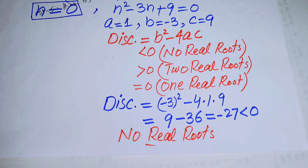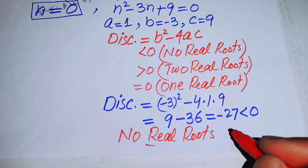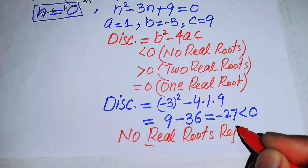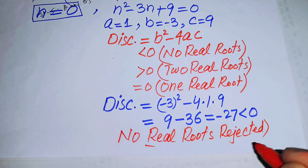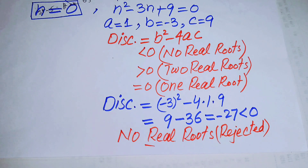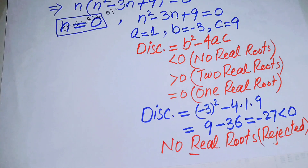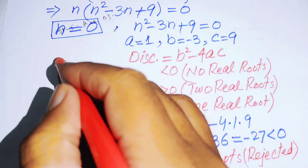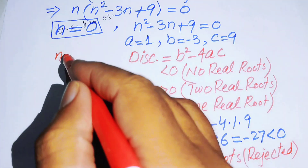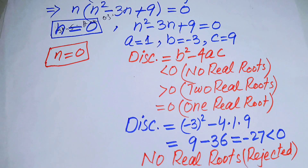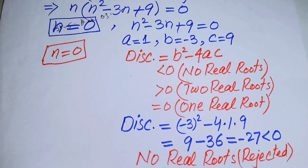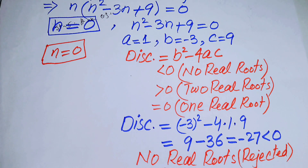Since the quadratic has no real roots, we reject that case. Therefore, the only real solution to this problem is n equals 0. This is our final answer. Thank you so much for watching this video — please subscribe to the channel for more exciting videos.